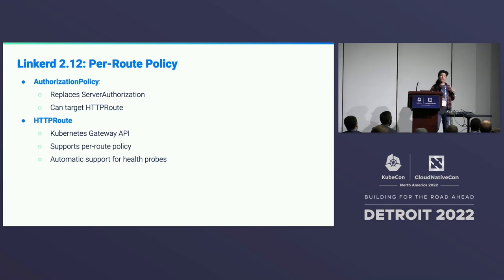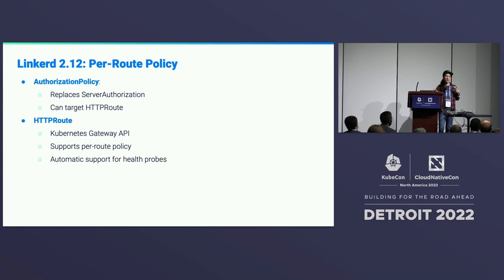We also added automatic support for health checks. Even if you don't manually configure which paths are health checks, we admit those automatically because we know what they are from your container spec — we know those are coming from the kubelet. So as long as they're coming from the right place, we don't require MTLS on them, and they just work. That's been a big quality-of-life improvement.